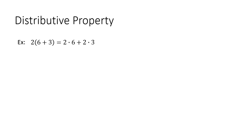Next we have the distributive property. You have a number usually on the outside of the parentheses and then you have variables or numbers on the inside. I'm using lines to represent what's happening here — you do two times six, which is right here, and then you do plus two times three, which is right here.